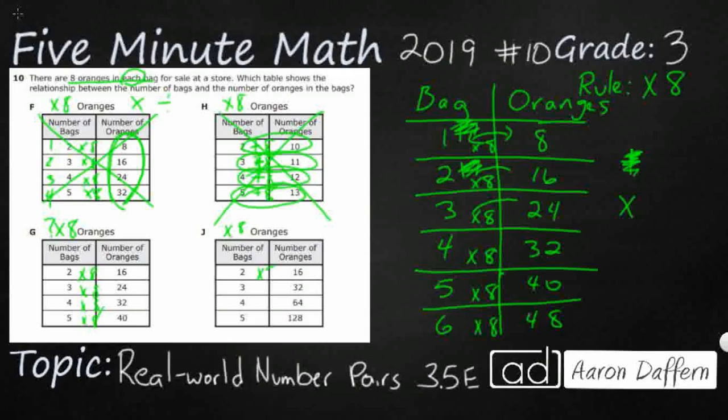So times eight, see that does work right there. But now it doesn't work for the second one or the third one or the fourth one. So that's why you got to watch out because the first one works in J, but our answer is going to be G.